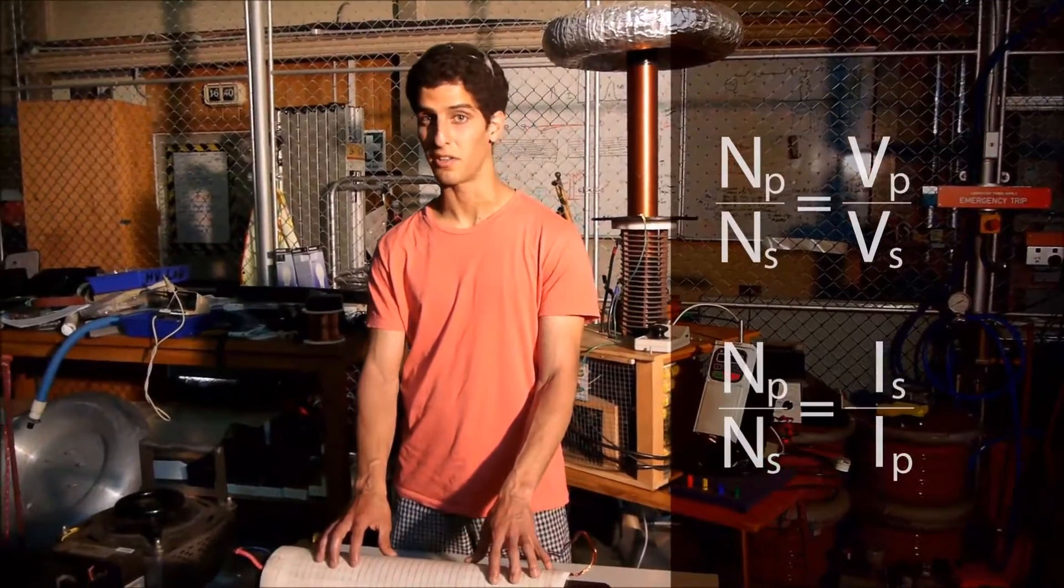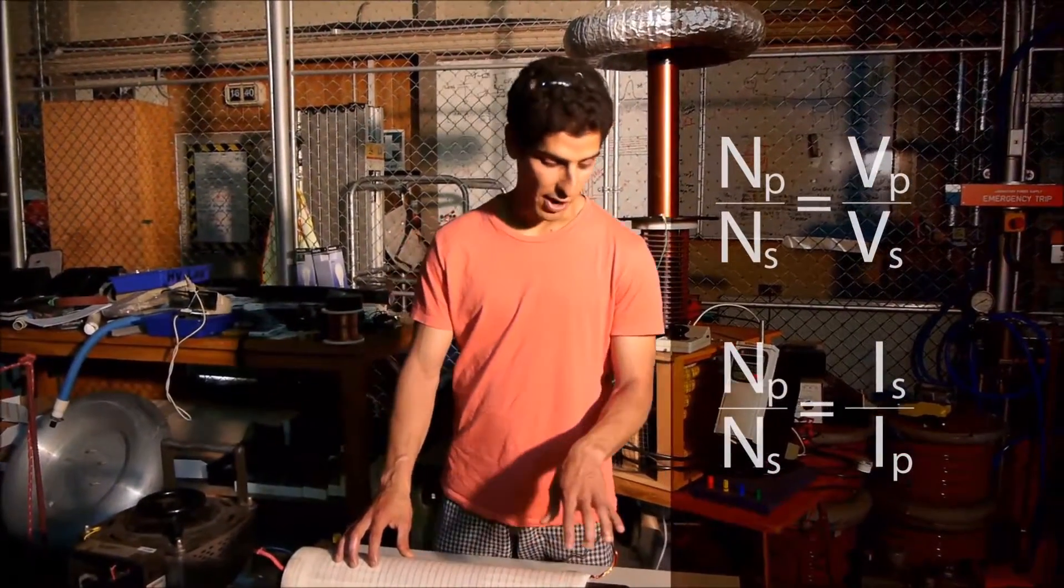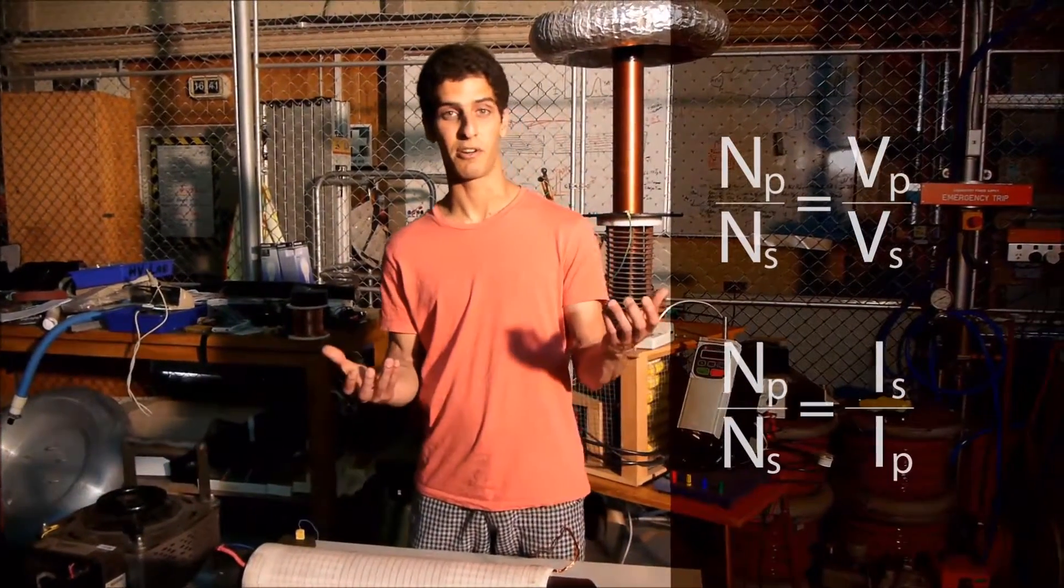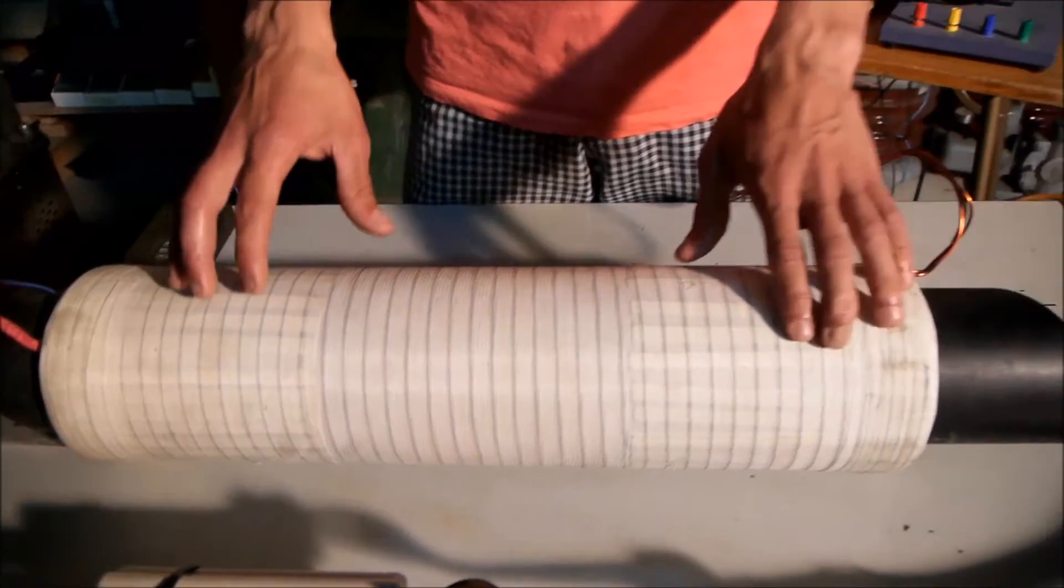So we have 300 turns on the primary coil and only about 3 turns on the secondary. So that gives us a ratio of about 100. So we should get 100 times more current through the secondary coil, which is what we're going to pass through our fork.